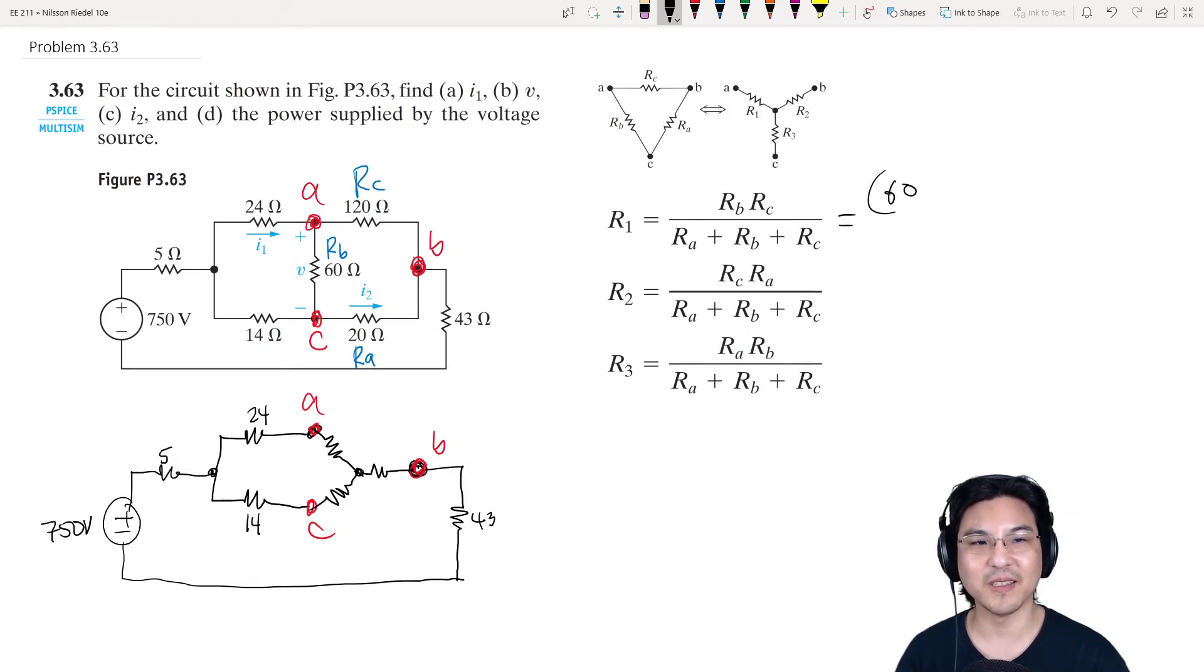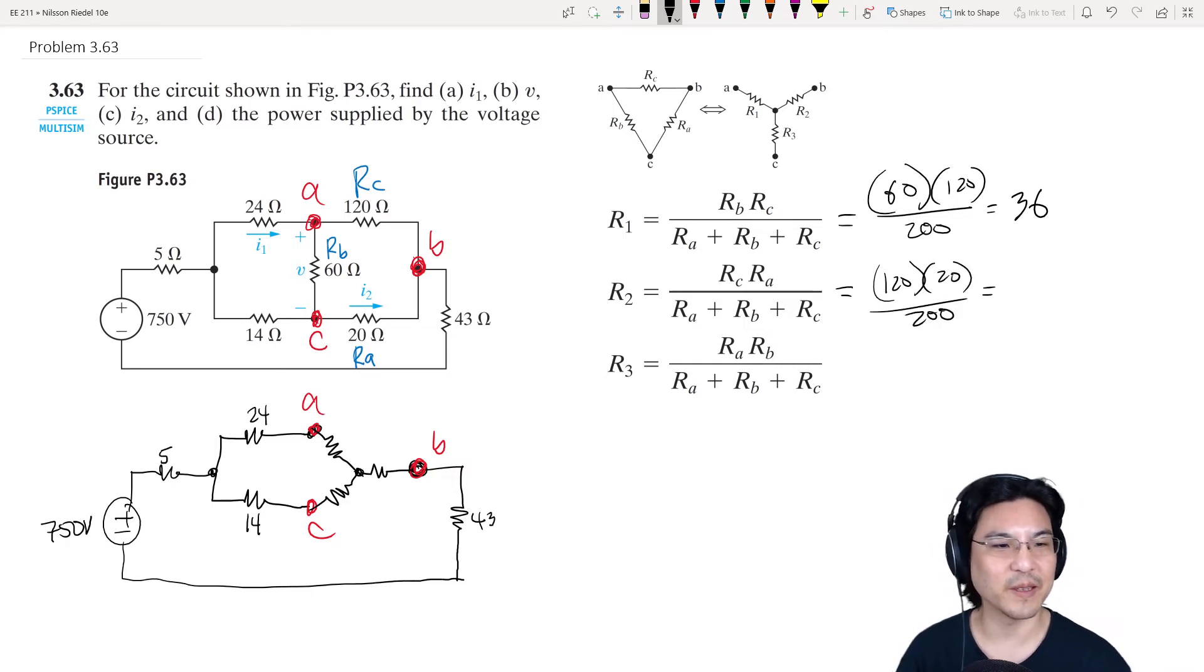Then I can just use those values and plug in the numbers. So RB is 60, RC is 120 over 120 plus 60 plus 20. So that's 200. Punch that in the calculator. RC 120, RA is 20, RA 20 over 200. Punch in the calculator. And then RA is 20, RB is 60 over 200. Punch in the calculator, and we got all three.